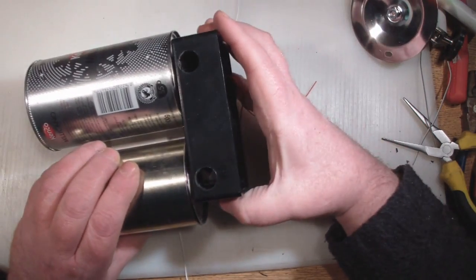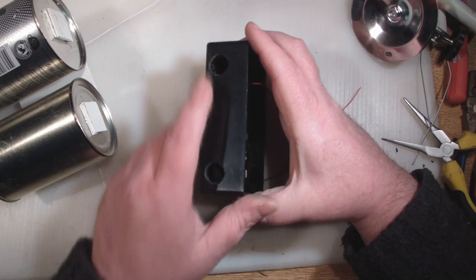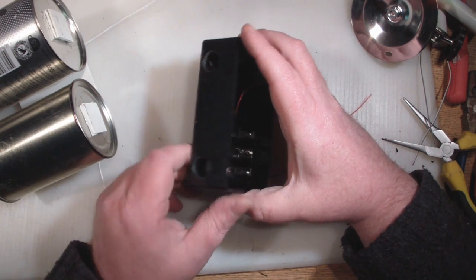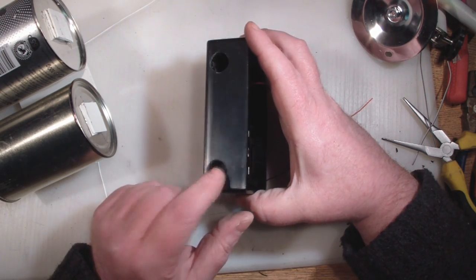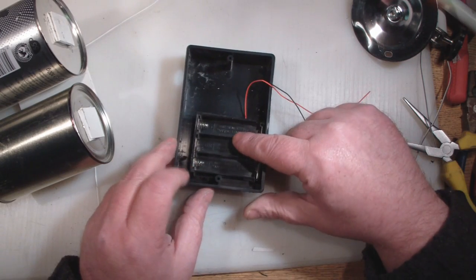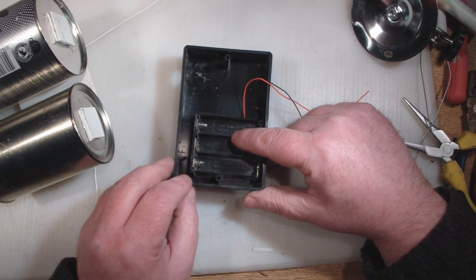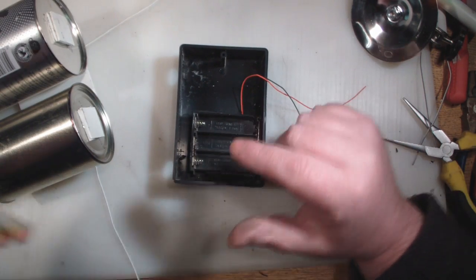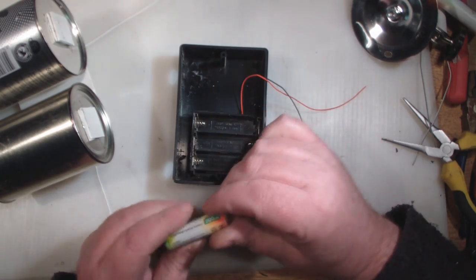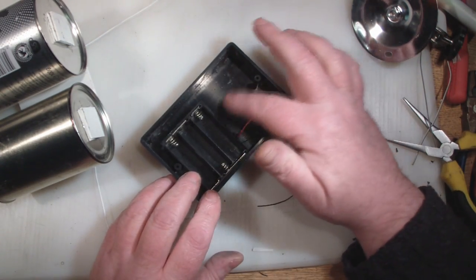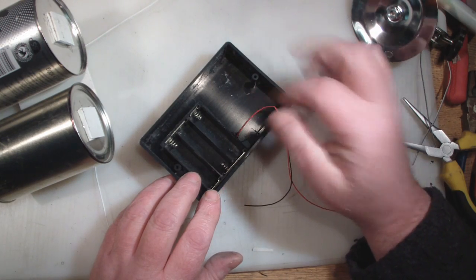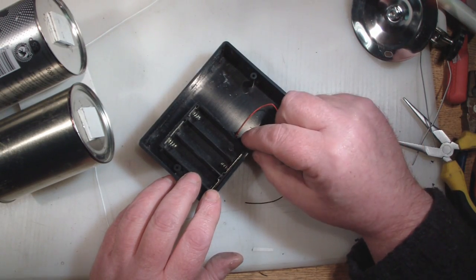I've drilled out two holes here to accept the omnidirectional dipole antennas. I've glued a battery compartment in here and it's going to be running off three AA rechargeable batteries. There's enough space in there to fit the motherboard for the actual repeater itself.